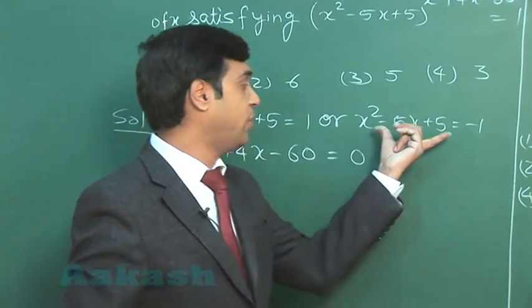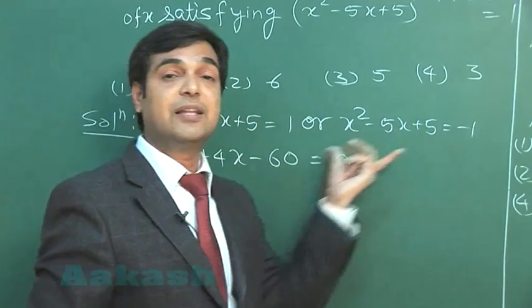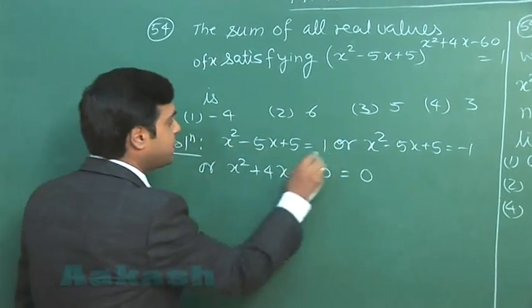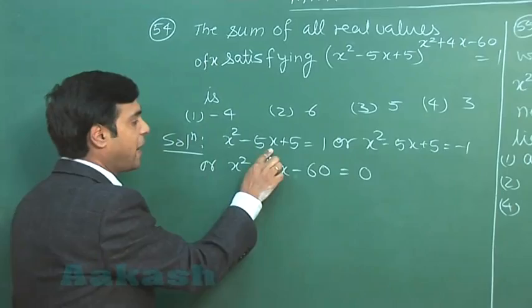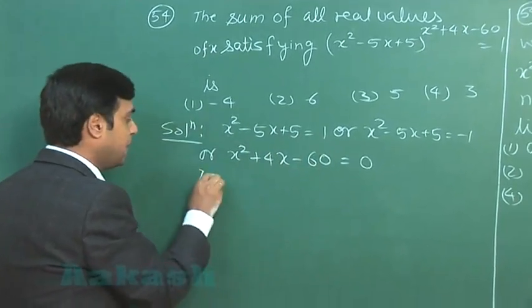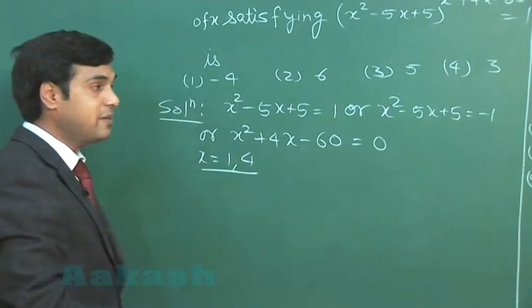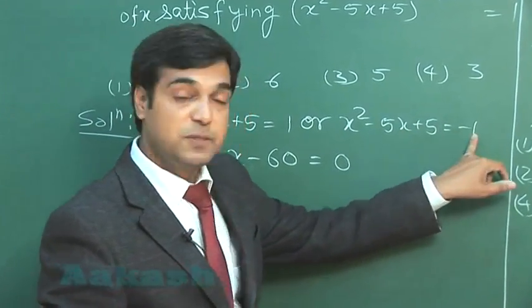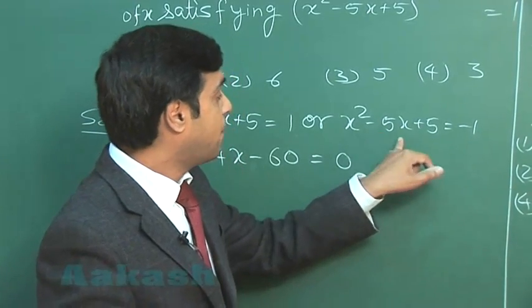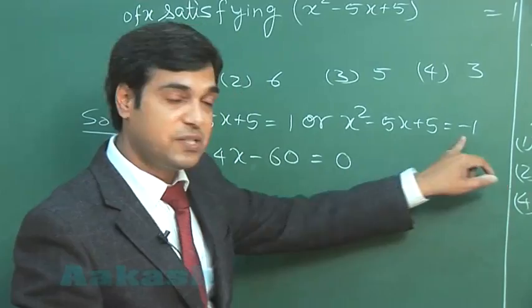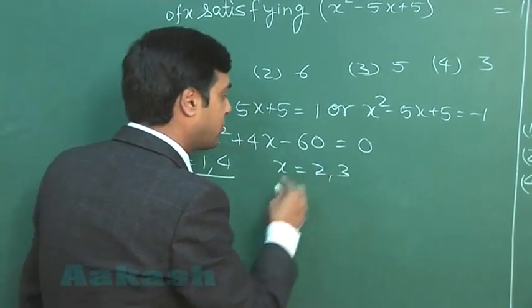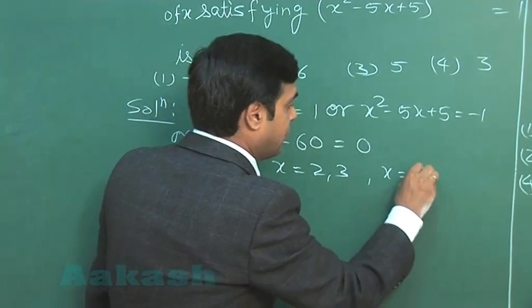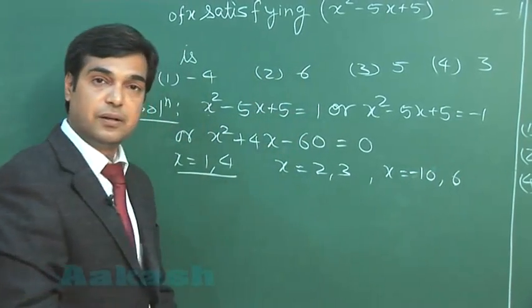But there is a constraint: when we are going to take the value as minus 1, the power must be even, otherwise the value will not come as plus 1. So let us solve these ones. The first one, when we say x squared minus 5x plus 4 equals 0, giving me x equals 1 or 4. Second, when I take x squared minus 5x plus 5 equals minus 1, it is giving me x squared minus 5x plus 6 equals 0, that is x equals 2 or 3. And last one, this is giving me x equals minus 10 or 6.